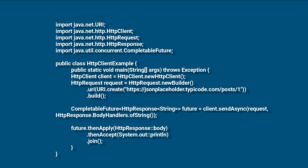Here's an example that demonstrates how to use the HTTP Client API to send a simple HTTP GET request and print the response body. In this example, we create an instance of HTTPClient using HTTPClient.newHttpClient, then create an HTTP request object representing an HTTP GET request to a specific URL. We then use client.sendAsync, passing the request and HTTPResponse.BodyHandlers.ofString, to asynchronously send the request and receive a CompletableFuture of HTTPResponse representing the response.